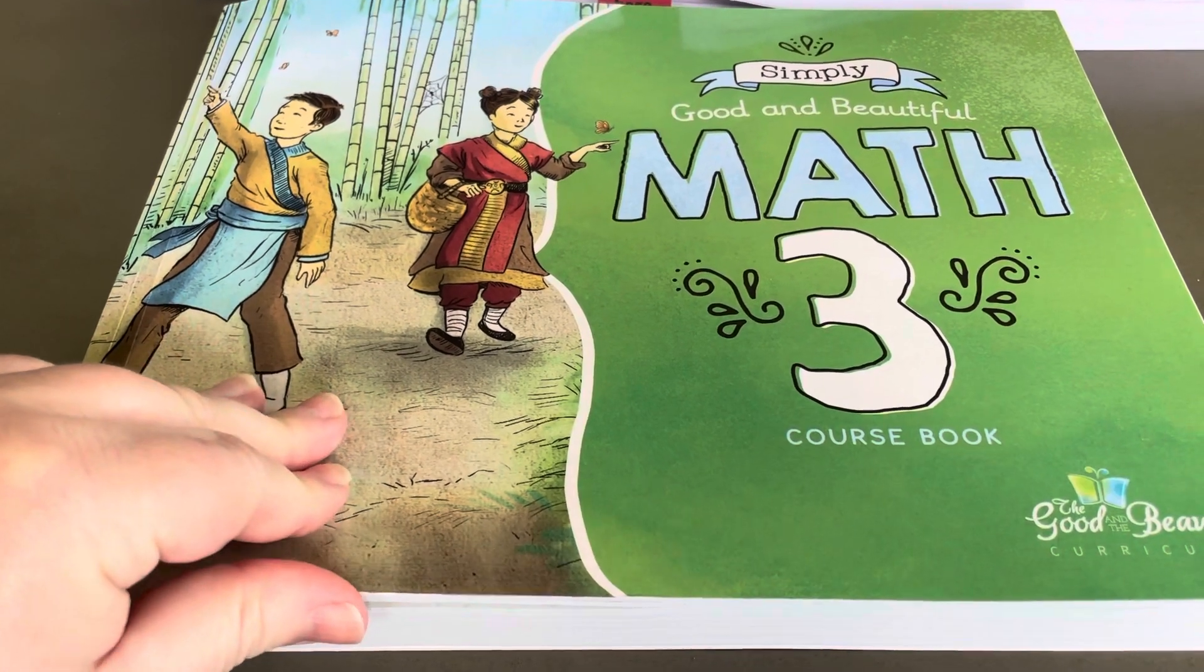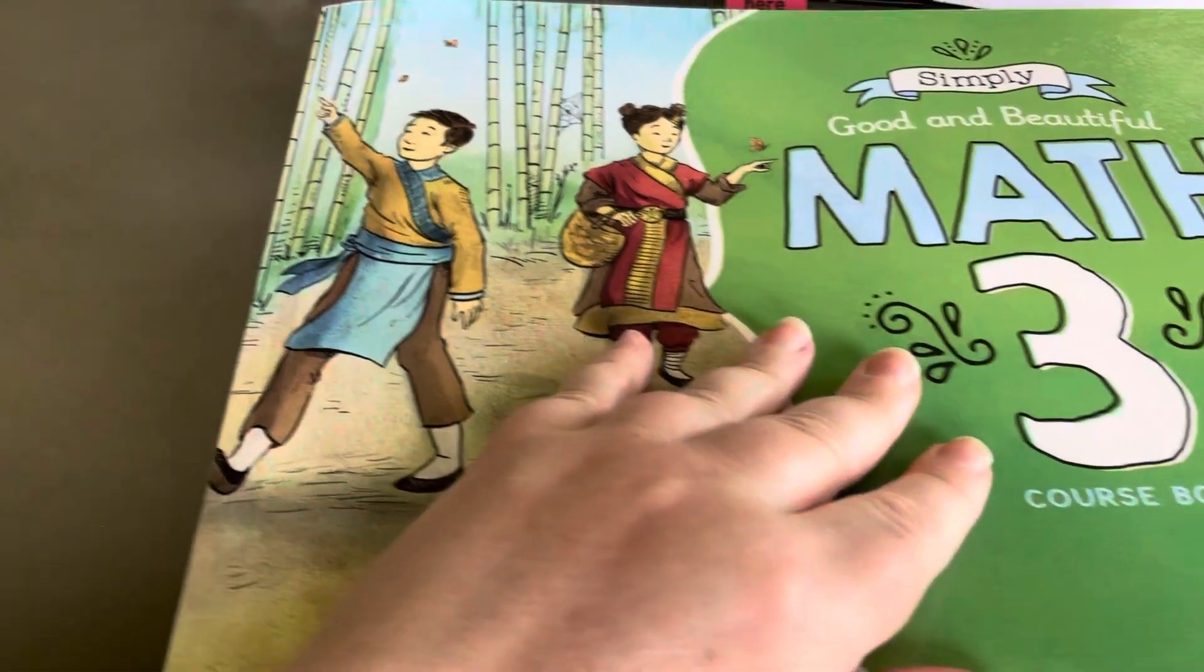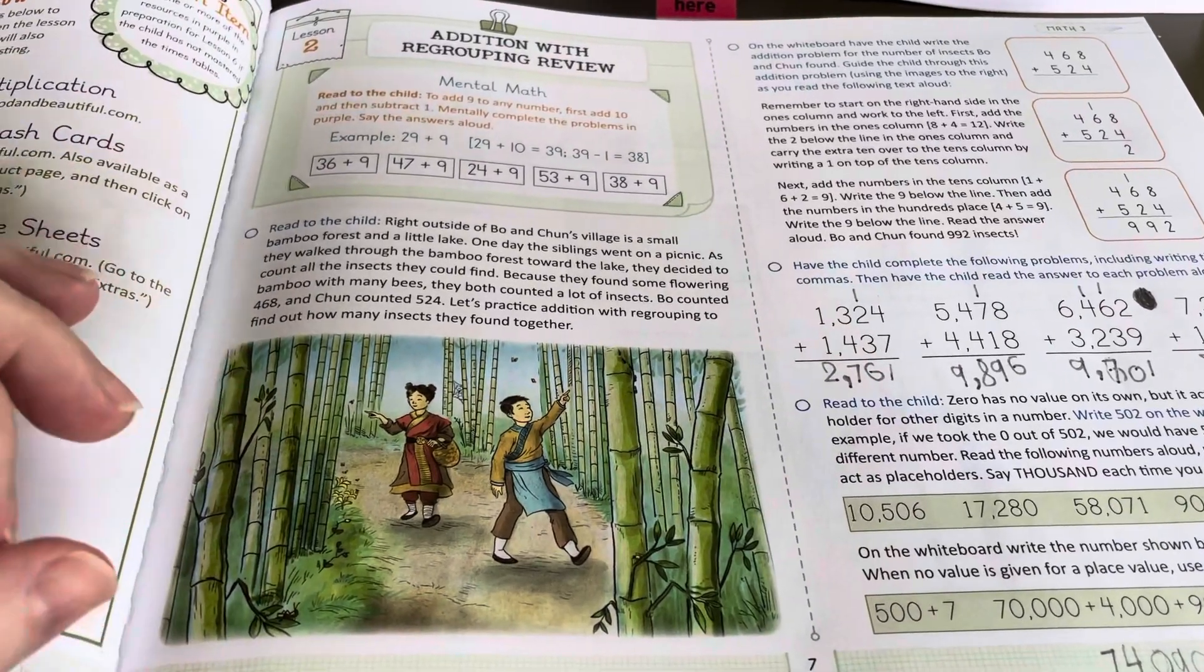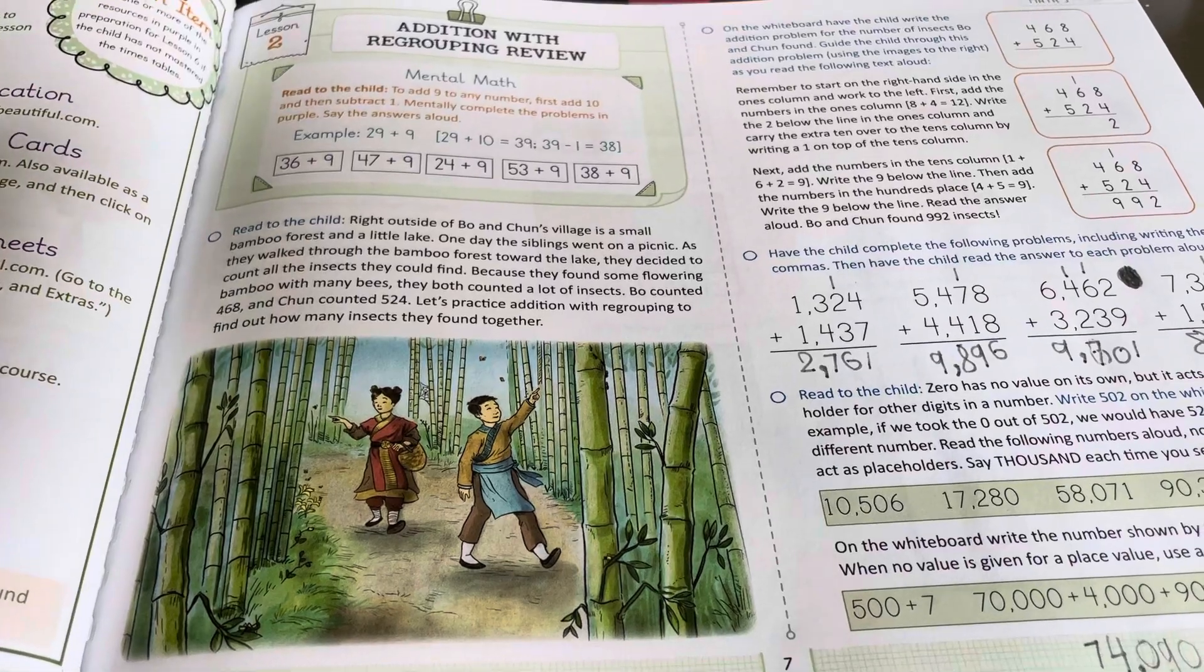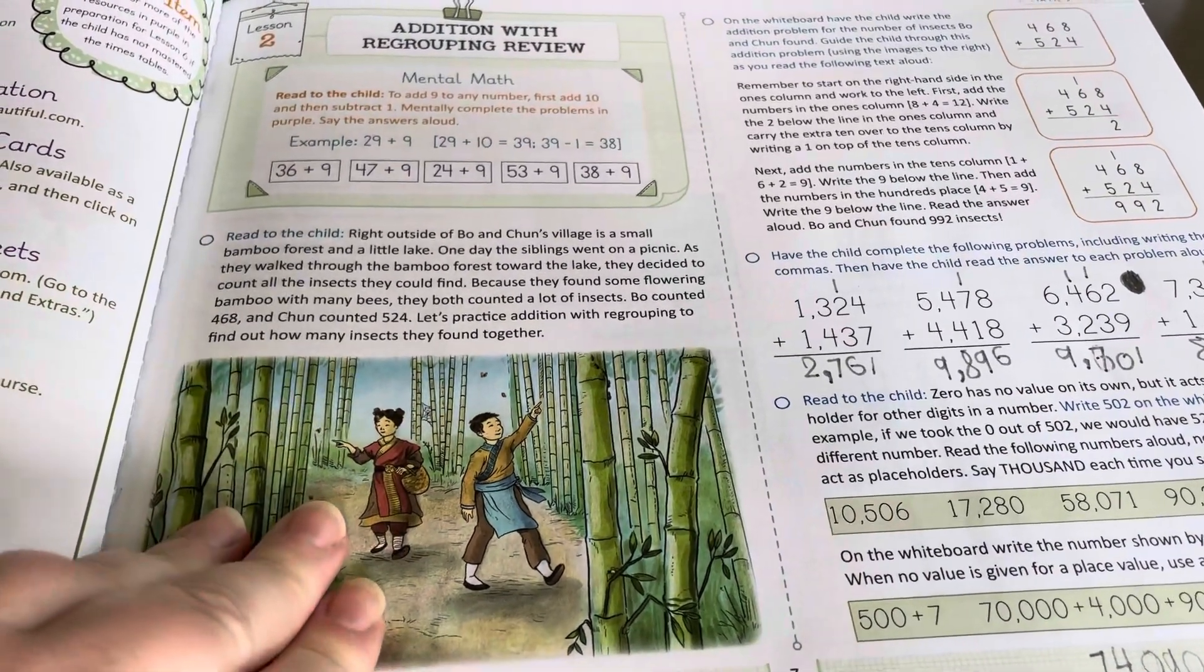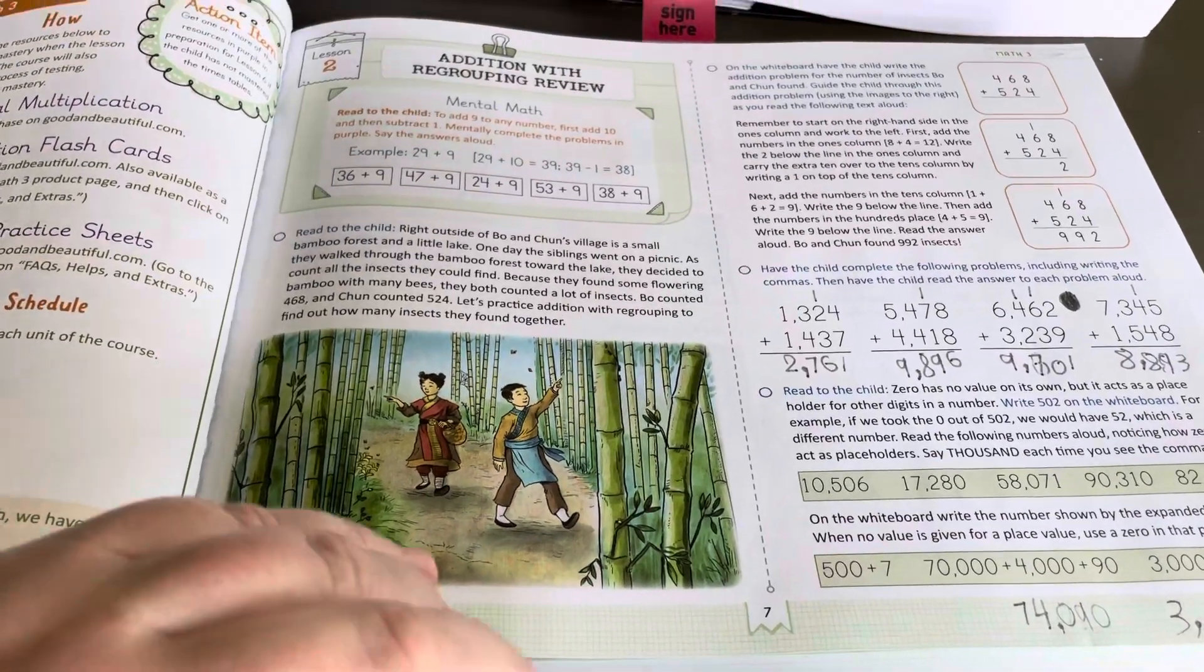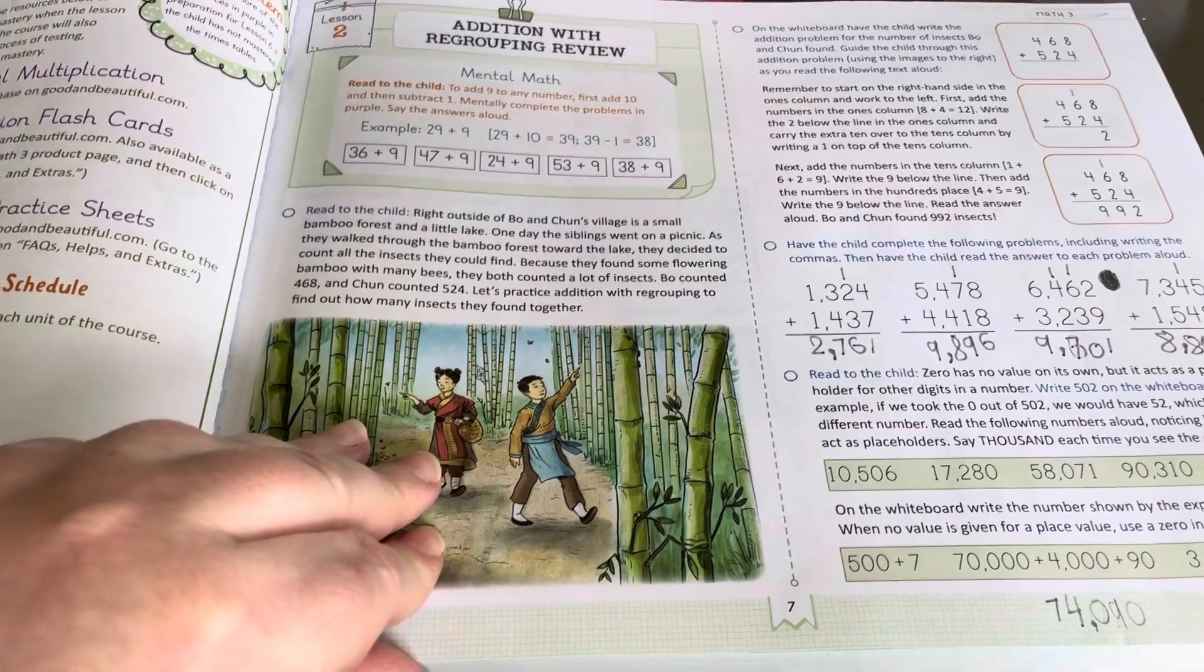One of the math programs we're going to be using is Simply Good and Beautiful Math 3. We did level two last year and he enjoyed it. I think the spiral method that the Good and the Beautiful uses worked well for him. We're going to do a couple of pages a day instead of doing a whole lesson a day because there's only 120 lessons and they are a little long.